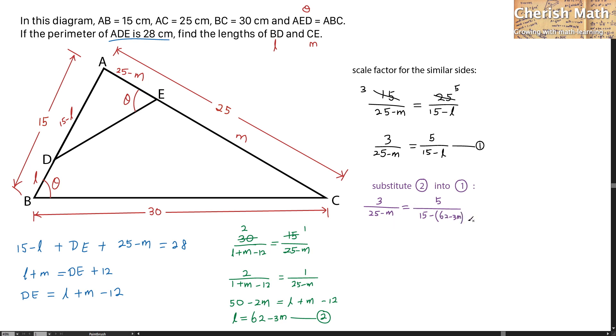I simplify the equation by doing cross multiplication. That turns to 3 times negative 47 plus 3M equals 5 times 25 minus 5M, which is 125 minus 5M. After doing the simplification, I'm going to get 14M equals 266, and the value of M is 19.